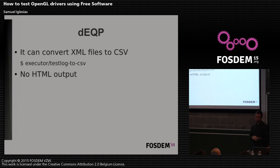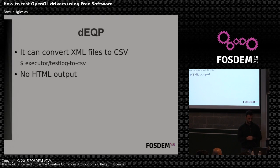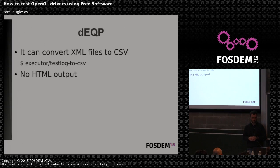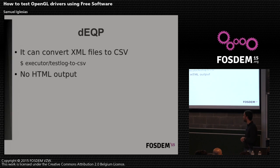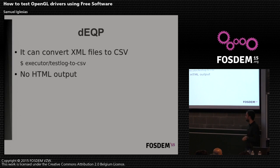The XML files are not always easy to read. If you have a lot of them, you need to parse them to check which tests actually failed. There are some conversion tools — for example, one that converts the XML file to a CSV format. But there is no HTML output or any other more human-readable format. The good thing is that Piglit, about two months ago, added support for running these dEQP tests, so we now have such output available.